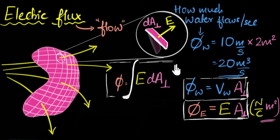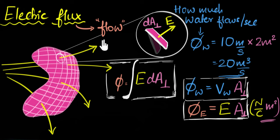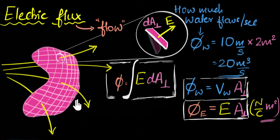To sum it up: electric flux is a number which tells you how much electric field is flowing through an area. The way to calculate it is to multiply the field strength by the perpendicular component of the area. If the field is changing everywhere and the area is curved, you calculate the flux over a tiny surface and integrate it over the entire surface. And remember, this is not just for electric field — tomorrow, if you're learning about magnetic flux, just replace E with B. This can be a flux of any field you want.